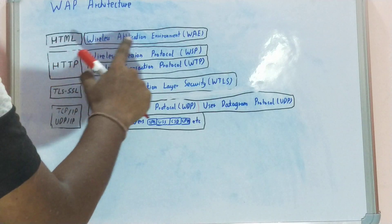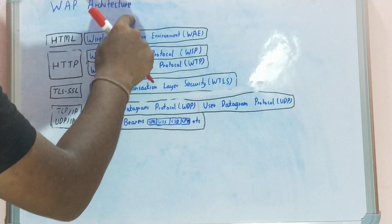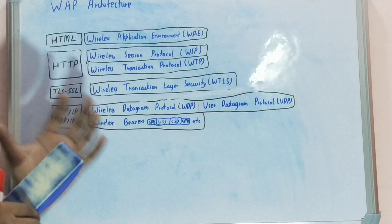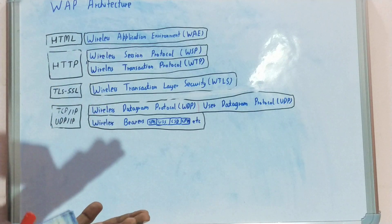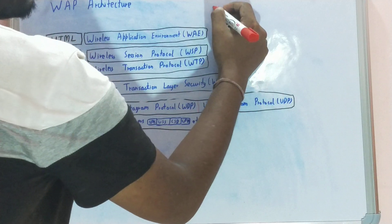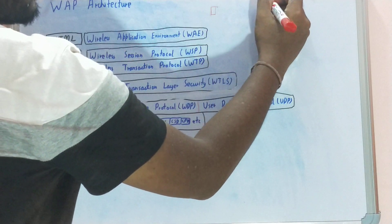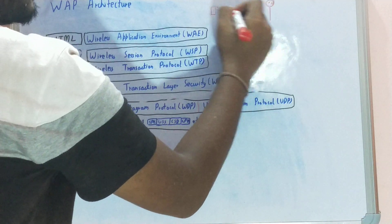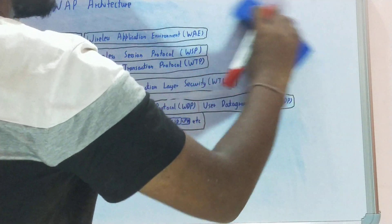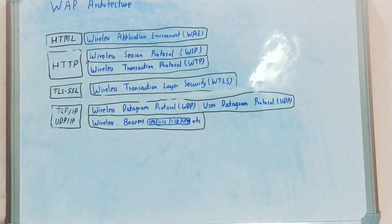The first layer is Wireless Application Environment. From the name only you can make out that it is the environment provided for controlling applications wirelessly. This acts as a bridge between the mobile communication device and the internet or worldwide web — it joins the both, acting as an interface. This makes use of HTML.